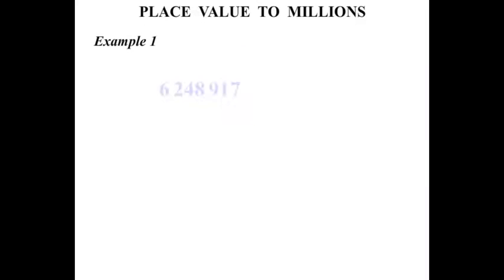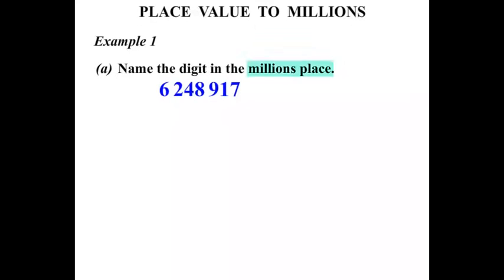Example 1, we've got a large number there, 6,248,917. And we're asked to name the digit in the millions place. So we're after that millions place. But we start from the right: ones, tens, hundreds, thousands, ten-thousands, hundred-thousands, millions. So the digit is 6 in the millions place.